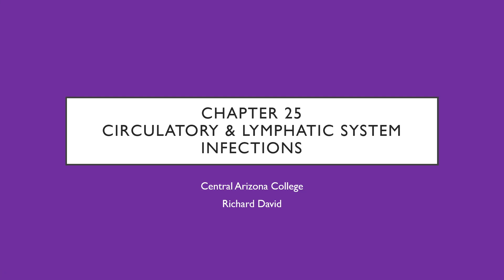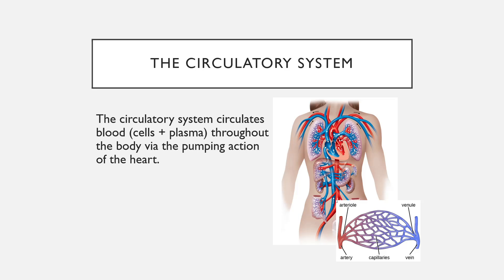Hello everyone and welcome to chapter 25: Circulatory and Lymphatic System Infections. The circulatory and lymphatic systems of the body are two separate systems that are so closely linked together that infections of one often amount to infections of the other, so we discuss them together. This is probably the heftiest chapter in terms of the number and volume of infections that we're going to cover, but as usual before we dive into those, we are going to take a brief look at the structure of these systems.